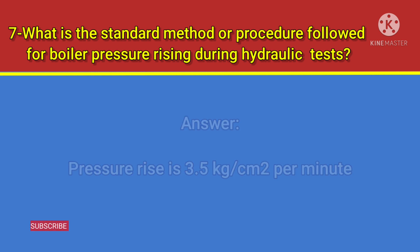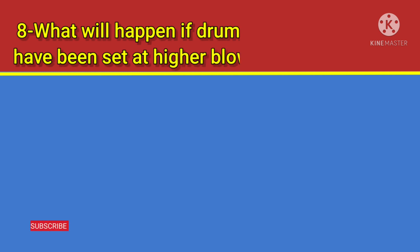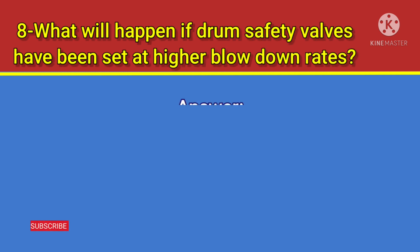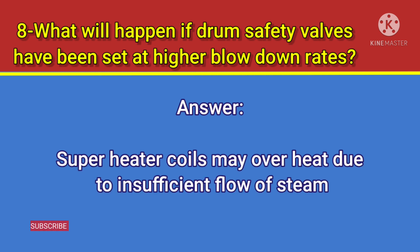Question number 8: What will happen if drum safety valves have been set at higher blowdown rates? Answer: Superheater coils may overheat due to insufficient flow of steam.